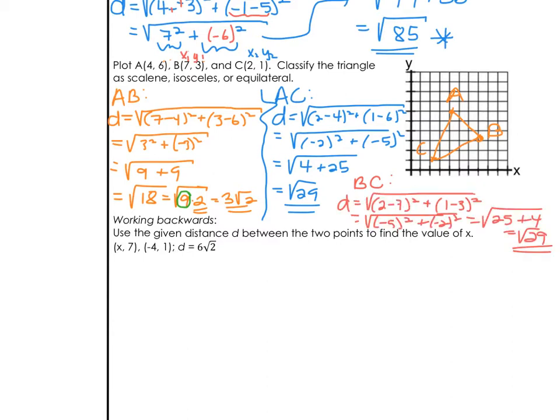For that last round, you should get BC equals the square root of 29. And again, like AC, that is the simplified form. Since two of the three sides are the same, so AC and BC are the same, we would actually classify this triangle as isosceles.